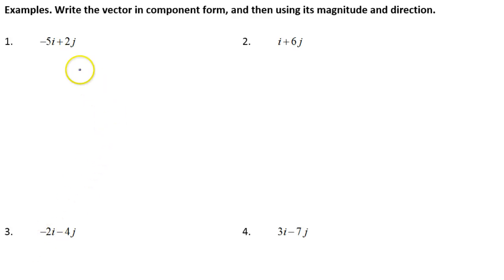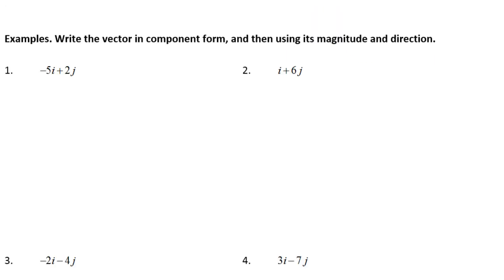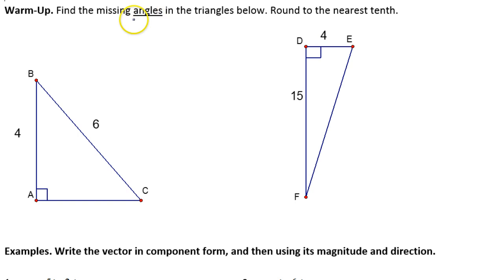In this video, we are given vectors written as the sum of unit vectors, and we will rewrite them in component form, calculate their magnitude and direction. But first, we will do a quick review of a basic concept of trigonometry, which is finding missing angles.